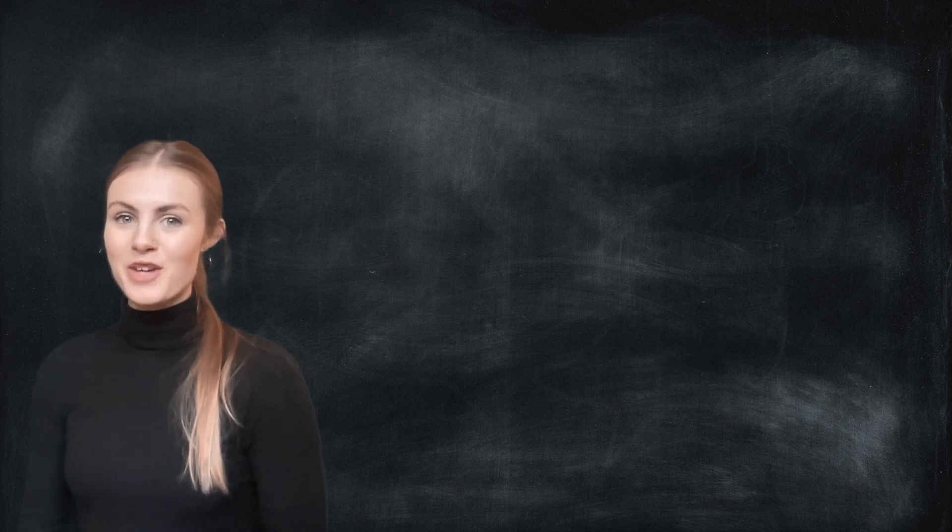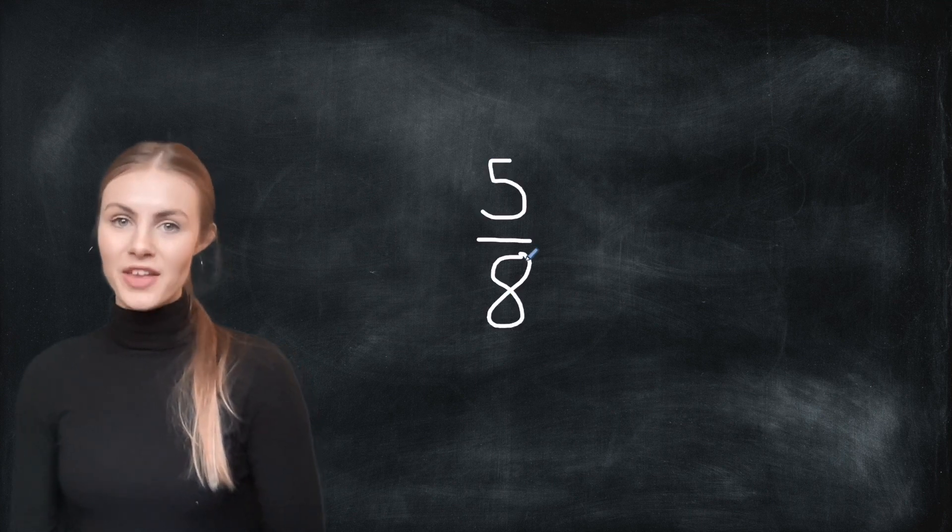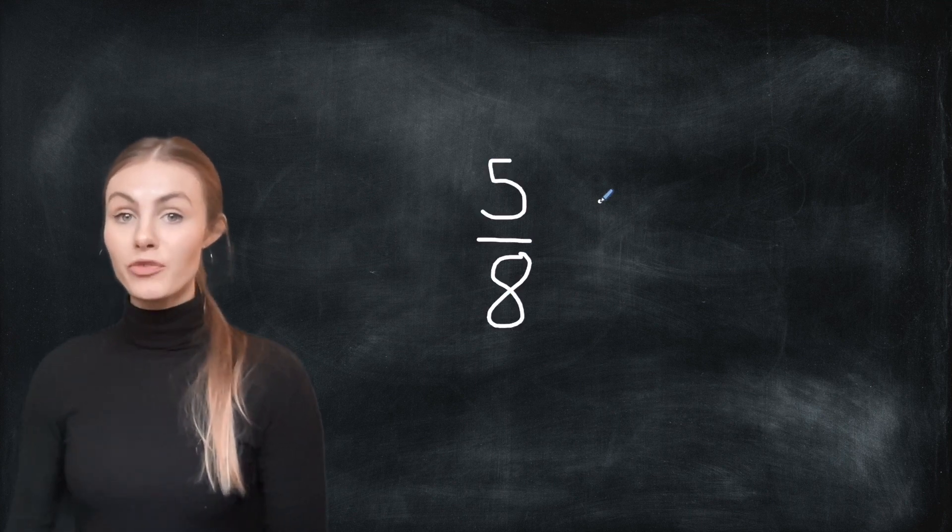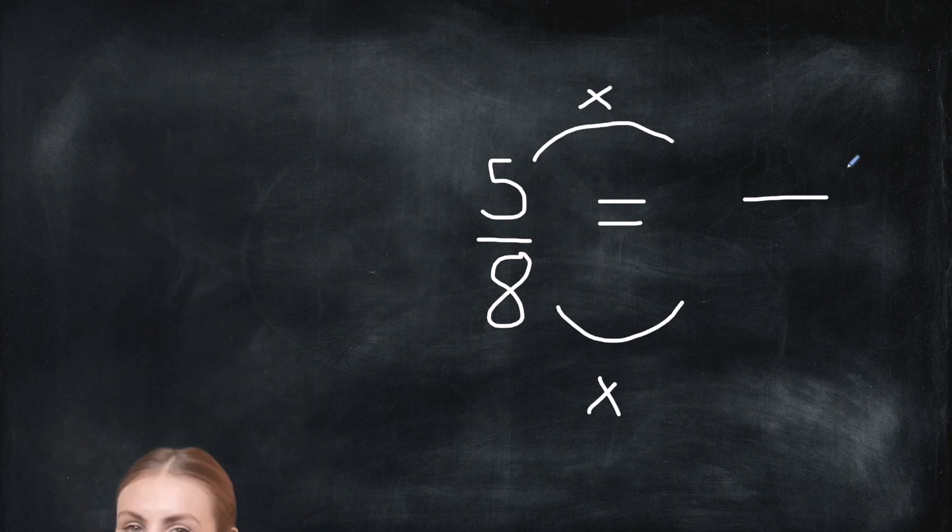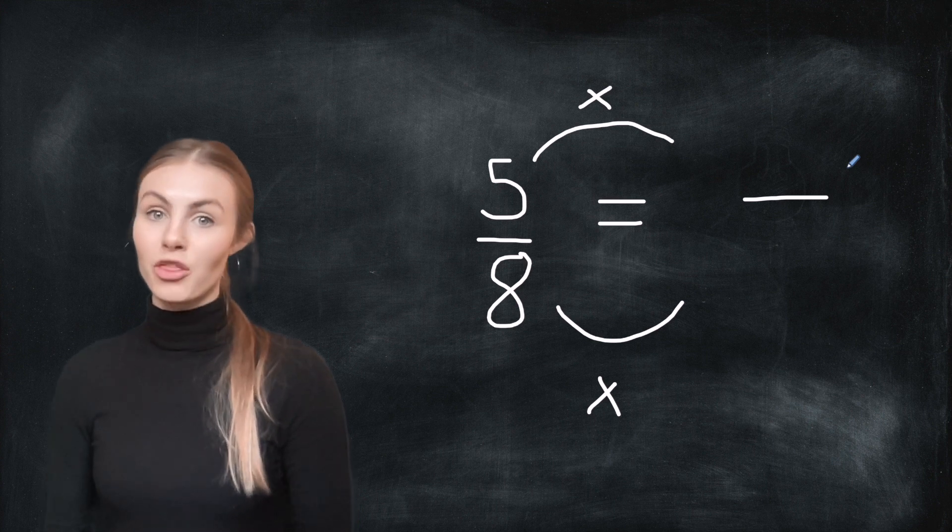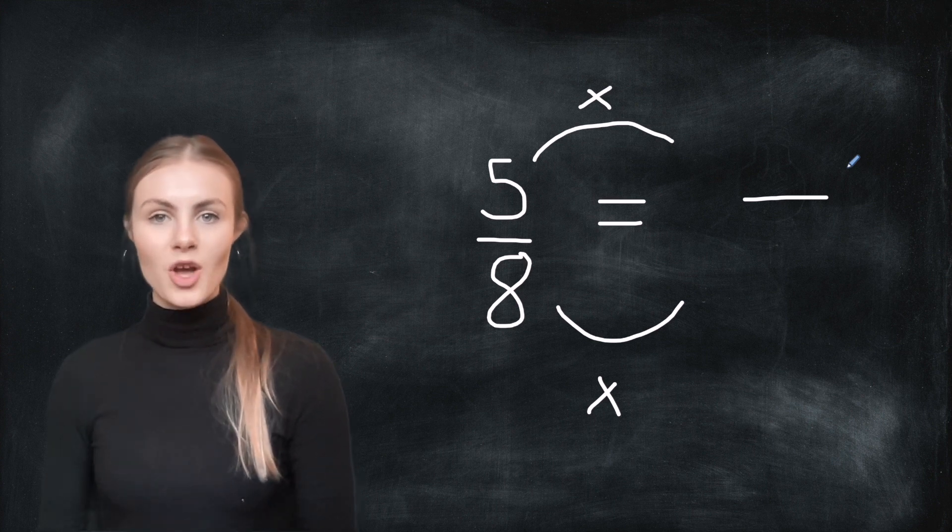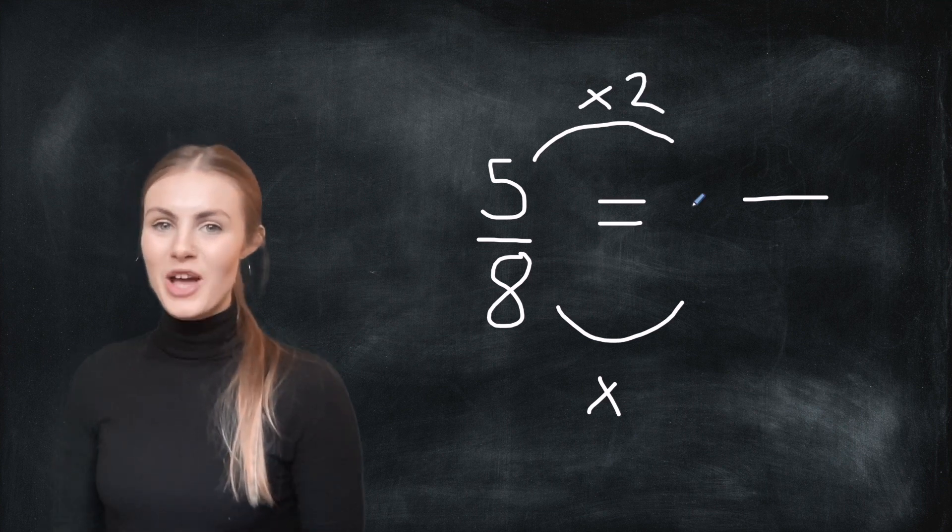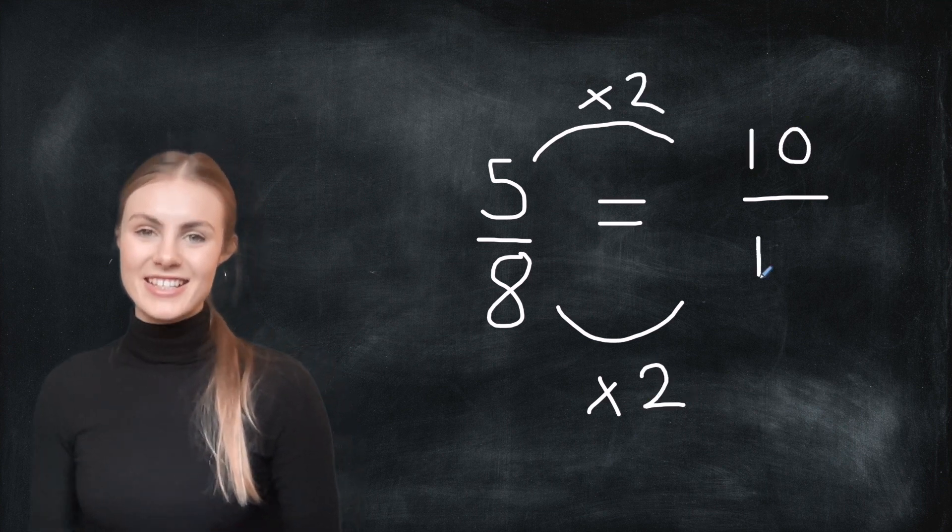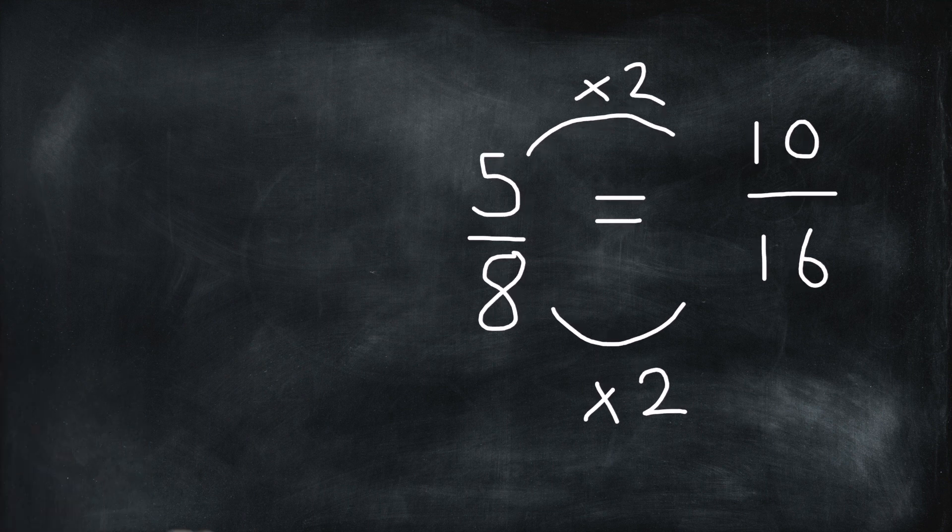Okay, your turn. Here I'm going to give you five eighths. Can you find an equivalent fraction using multiplication? Pause the video now. Okay, answer coming in three, two, one. What we can do is multiply five eighths by two and that will give us ten sixteenths.